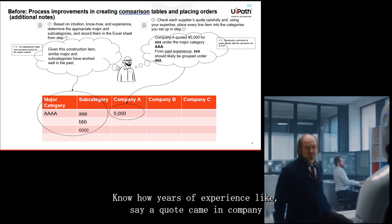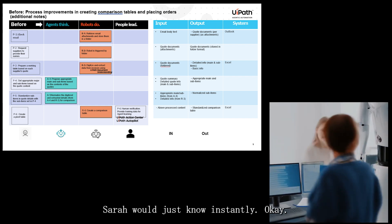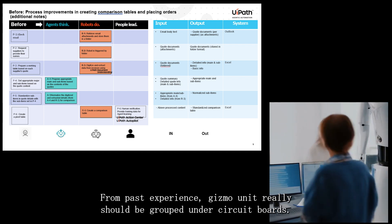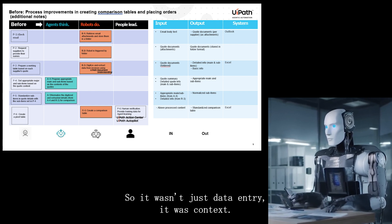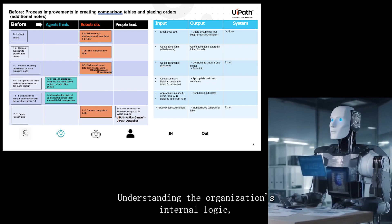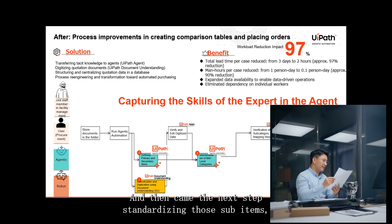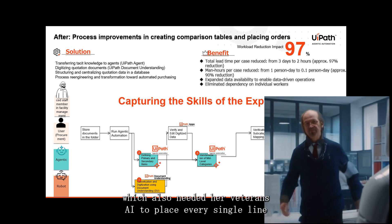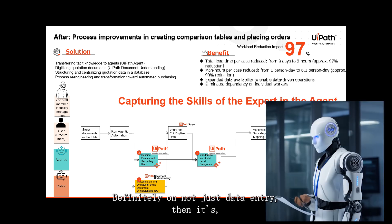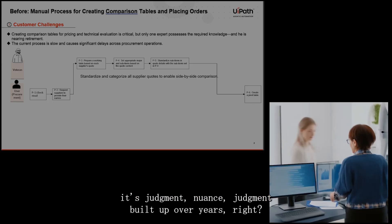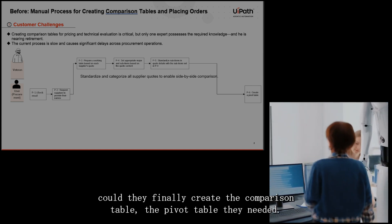For example, if a quote came in with 'gizmo unit' under the major category 'electronics,' Sarah would instantly know from past experience that it should be grouped under 'circuit boards' — that's how they'd always categorized similar things, even if the supplier used different words. It wasn't just data entry; it was understanding the organization's internal logic, its taxonomy, and mapping supplier terms to that. Then came standardizing sub items, which also needed her veteran's eye — nuanced judgment built up over years.